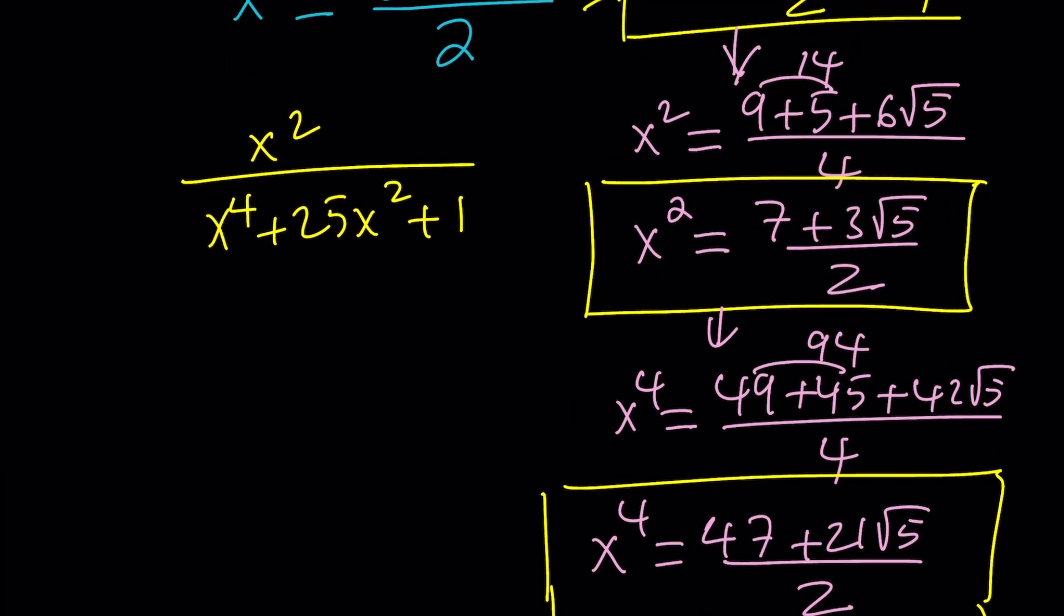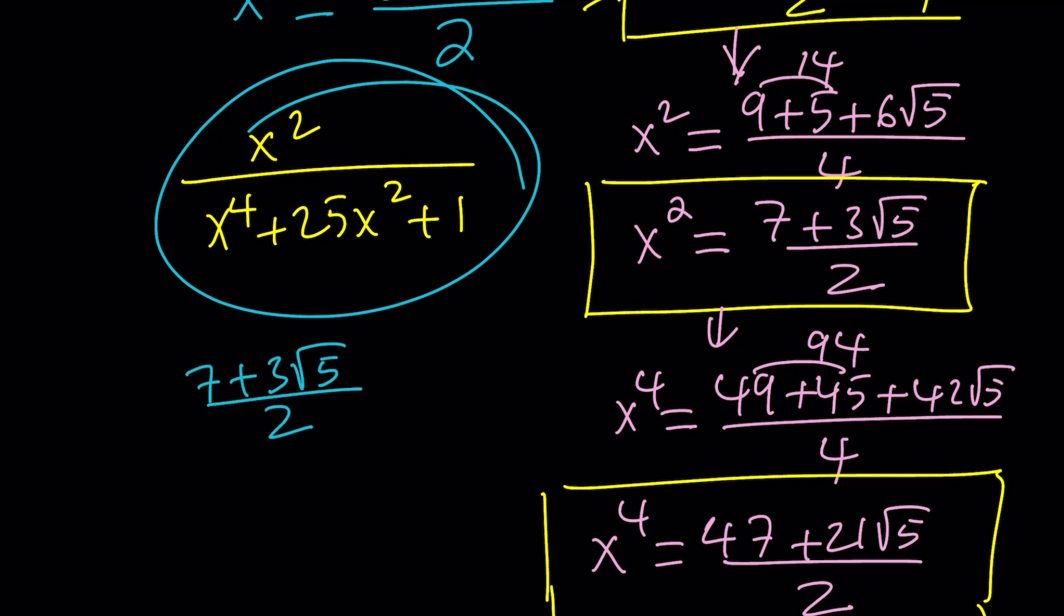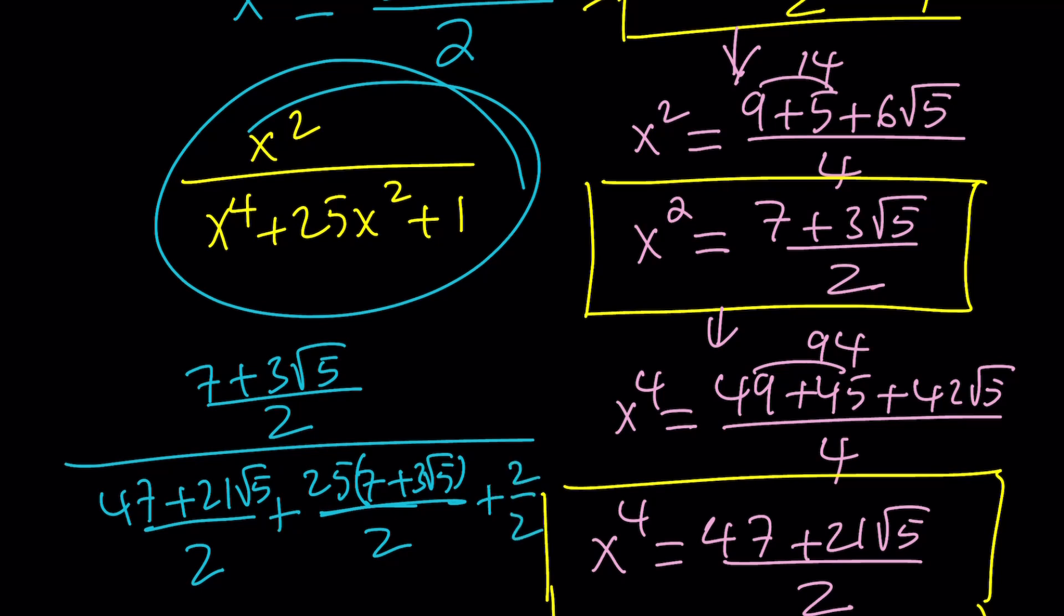Now we're supposed to evaluate this expression right here. So let's go ahead and replace x squared with 7 plus 3 root 5 over 2, and then we're going to divide it by x to the 4th power, which is 47 plus 21 root 5 divided by 2, plus 25x squared. Let's go ahead and write it this way for now, plus 1. You can write this as 2 over 2 so that we have a common denominator. Now notice that because the top and the bottom have the same denominator, we can totally forget about the denominators and just add the numerators.